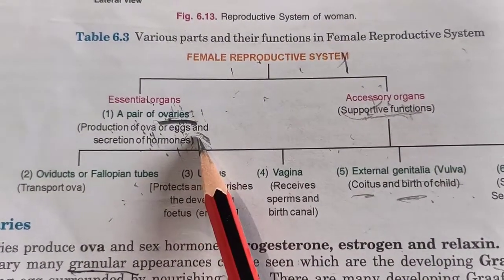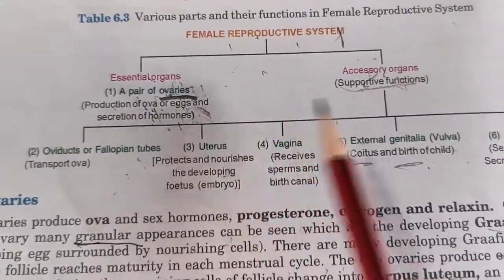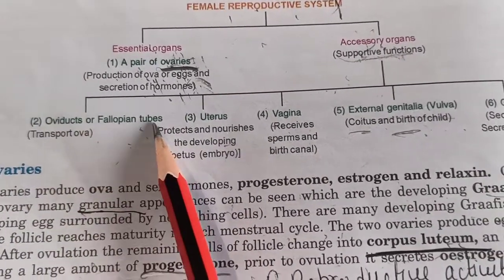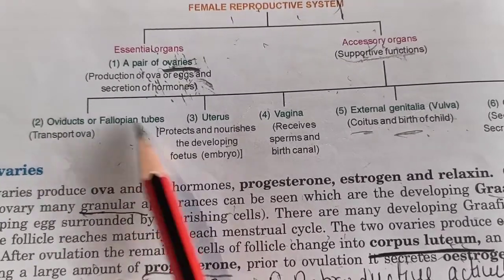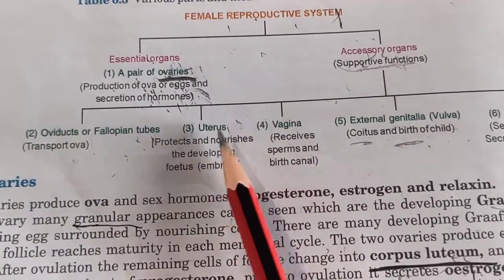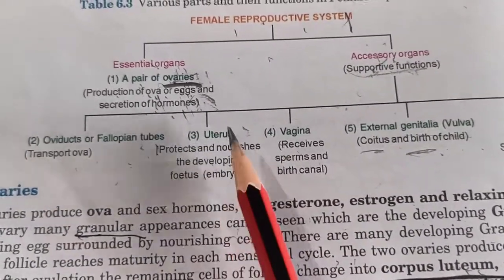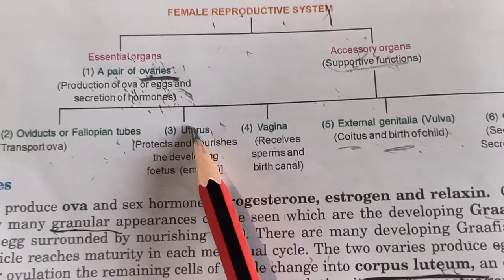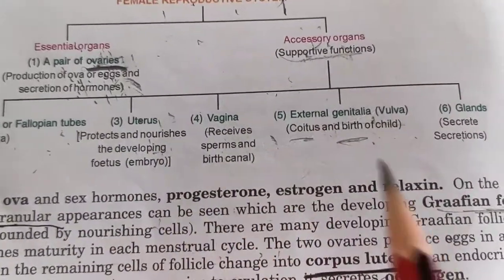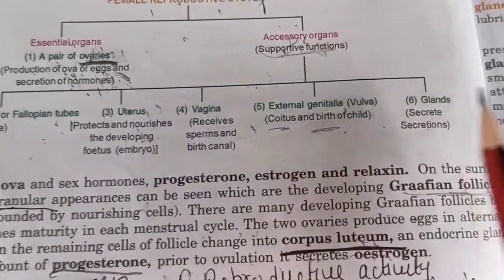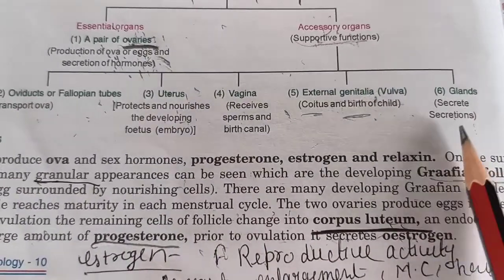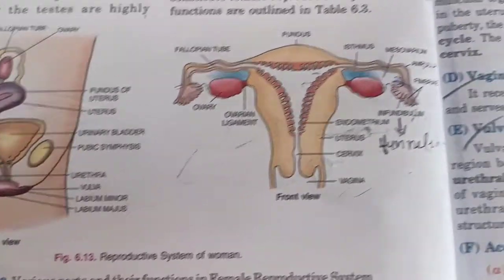The first accessory part is the oviduct, which is the fallopian tube, whose job is to support the female reproductive system. Then the uterus, which is where the fetus is nourished and the children survive. The external genitalia help in sexual intercourse, and the glands produce hormones, provide nutrition and lubrication. This is the diagram of the female reproductive system.